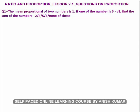Hello, this is Ratio and Proportion Lesson 2.1. In this I will discuss questions on proportion. Now the mean proportion of two numbers is one. One of the numbers is 3 minus root 8. Let's take another number as x.